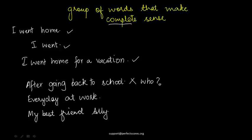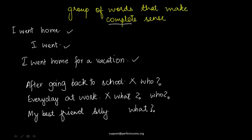Similarly, look at the second example: 'Every day at work.' We understand we're talking about work and every day at work, but what are we talking about? Whom are we talking about? We don't know those answers, so this is also making incomplete sense and that is why it is not a sentence. Now look at the next example: 'My best friend Ali.' This tells us the person we are talking about, but nothing else. What is Ali doing? We don't know — so it's making incomplete sense and this is also not a sentence.